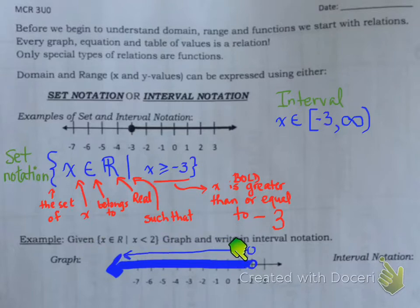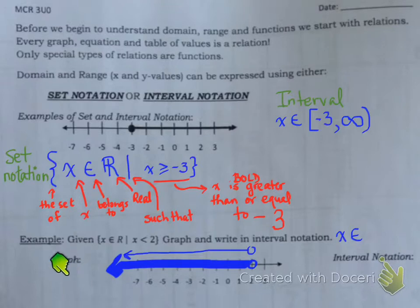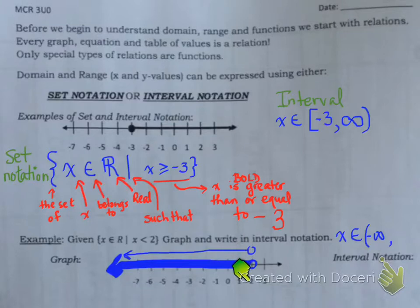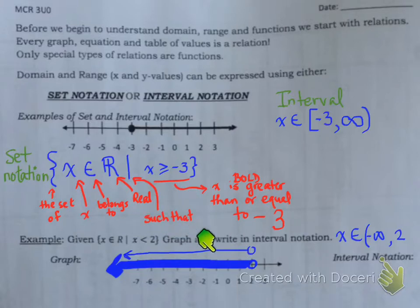Now we have to draw this as interval notation. We write X belongs to - where do we start? We're starting here, which is beyond in the negative direction. So round bracket, negative infinity, because that's where it's going towards. Then up to the number 2. Do we include the number 2? There's an open circle and no equal sign underneath, so we're not including 2. So what kind of bracket goes here? That's right - a rounded bracket. So the interval notation is negative infinity to 2, both with round brackets.